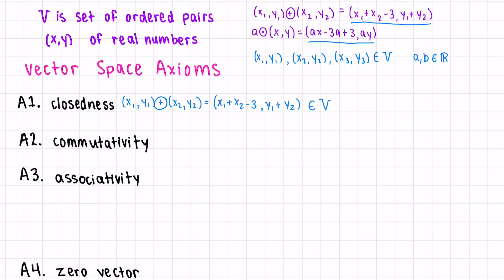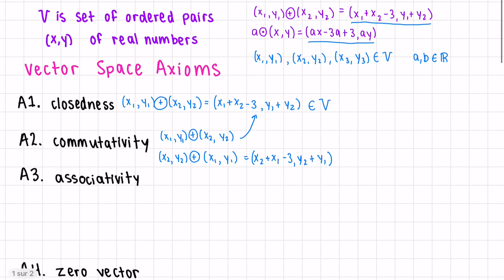Now let's show commutativity — this means the order doesn't matter. We've already shown what (x1, y1) + (x2, y2) is equal to, so let's do it the other way around. Looking at the rule at the top, the x's and the y's have switched, but because they're numbers, order doesn't matter. So the left side equals the right side — it is commutative.